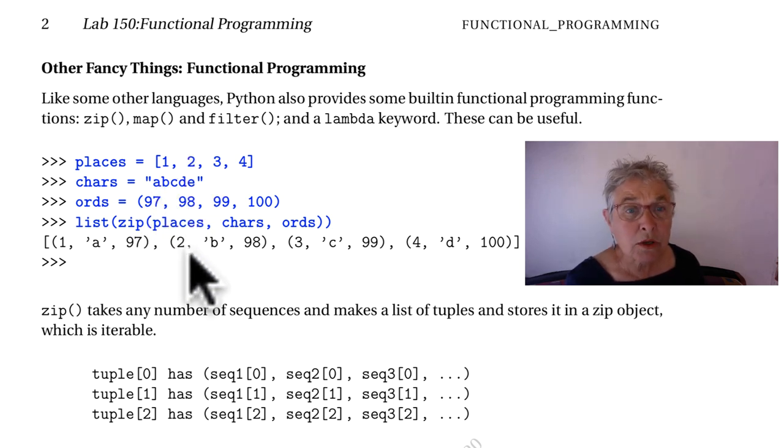Now you might notice that there are five elements in chars and only four in the other two sequences. That's no problem. It's just that zip will not look at that. When any of your sequences run out of items, zip is finished.